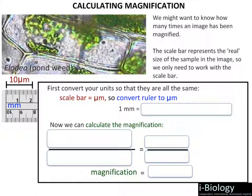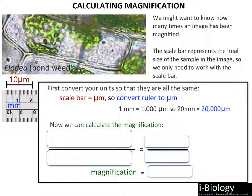In order to do the magnification calculation, you need to make sure your units are the same. Since microscopic things use microscopic units, we're going to have to convert our ruler measurement. Remember: one millimeter is equivalent to 1000 micrometers. So if we have 20 millimeters, that equals 20,000 micrometers — we just take 20 millimeters and multiply it by 1000.